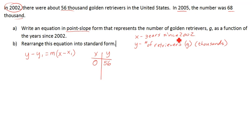How many years is that since 2002? Well, hopefully you got that that's three years, and so now there's 68,000. So 68 would be the number of retrievers in thousands. So now we've got two points.